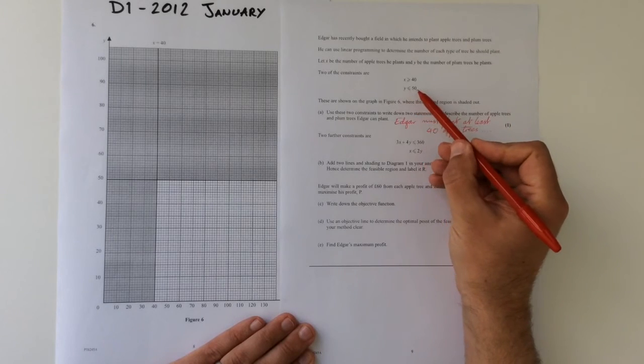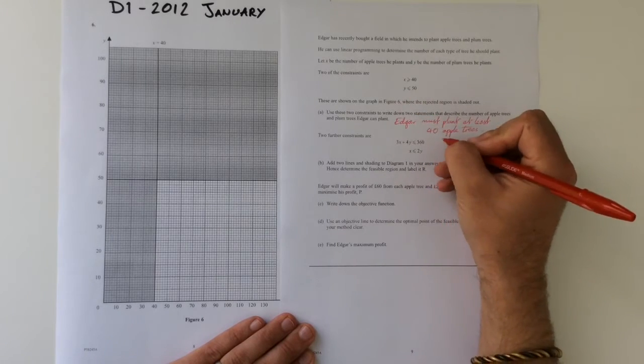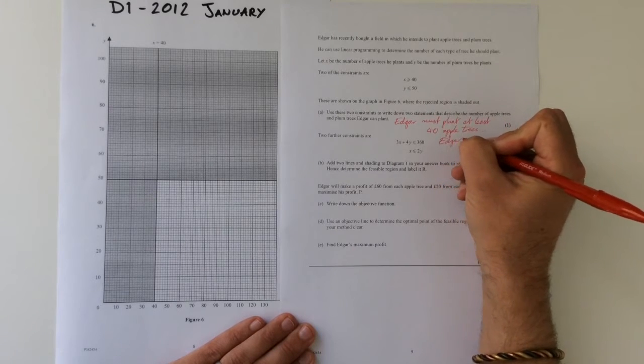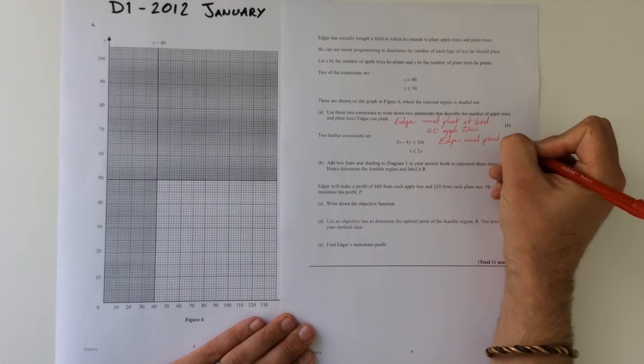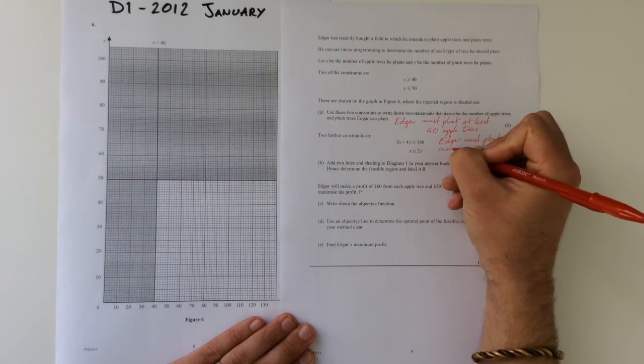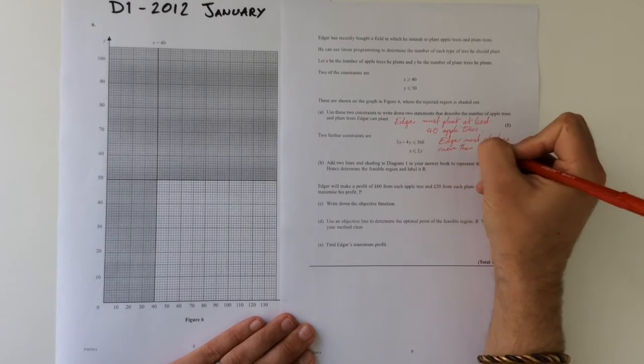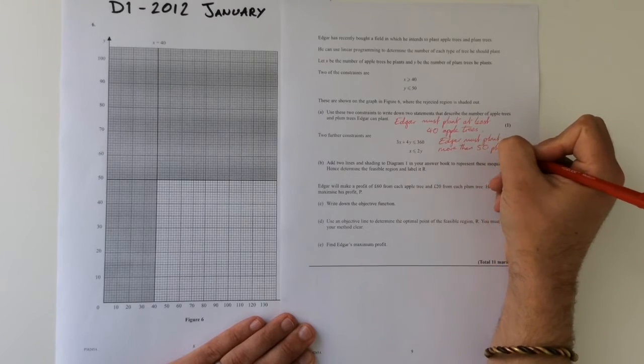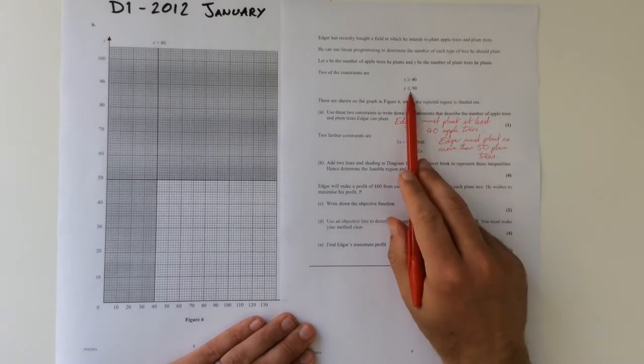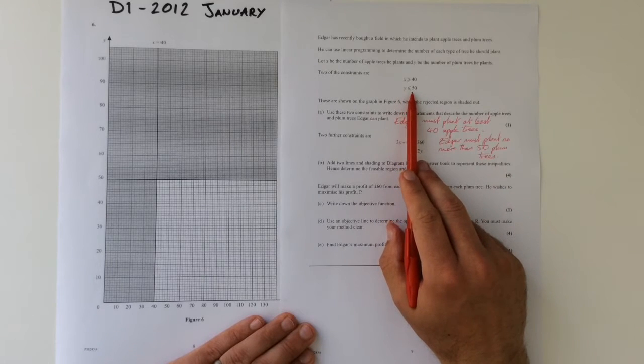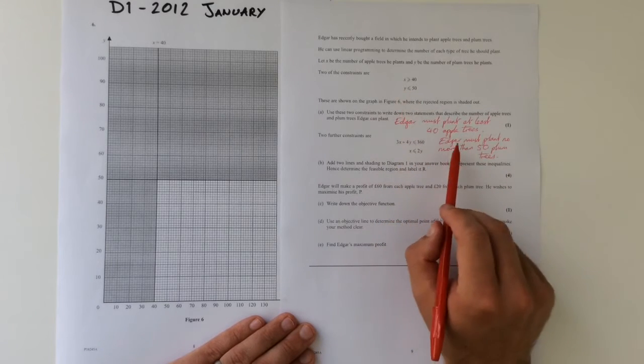Then for the other one, y is less than or equal to 50. Edgar must plant no more than 50 plum trees. So really, we're just translating those two statements into standard English text.